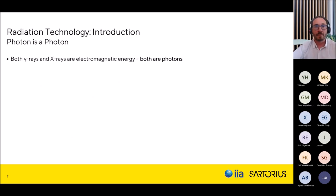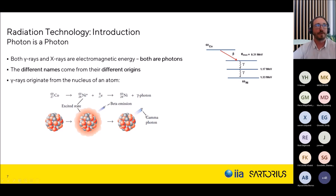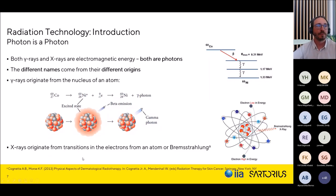Both gamma and X-ray are photons — electromagnetic energy. They have different names because they differ in origin. Gamma rays originate from the radioactive decay of an atom, in our case cobalt-60, producing gamma photons during decay. X-rays arise from the transition of an electron — the bremsstrahlung effect — where a high-energy electron passing near an atom slows down and emits X-ray photons. But ultimately, both are high-energy photons.